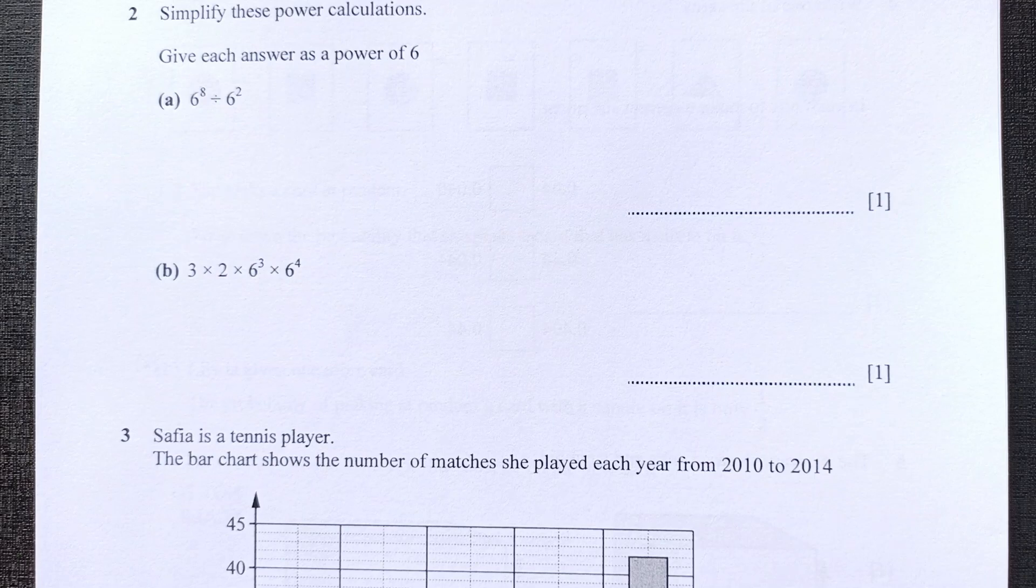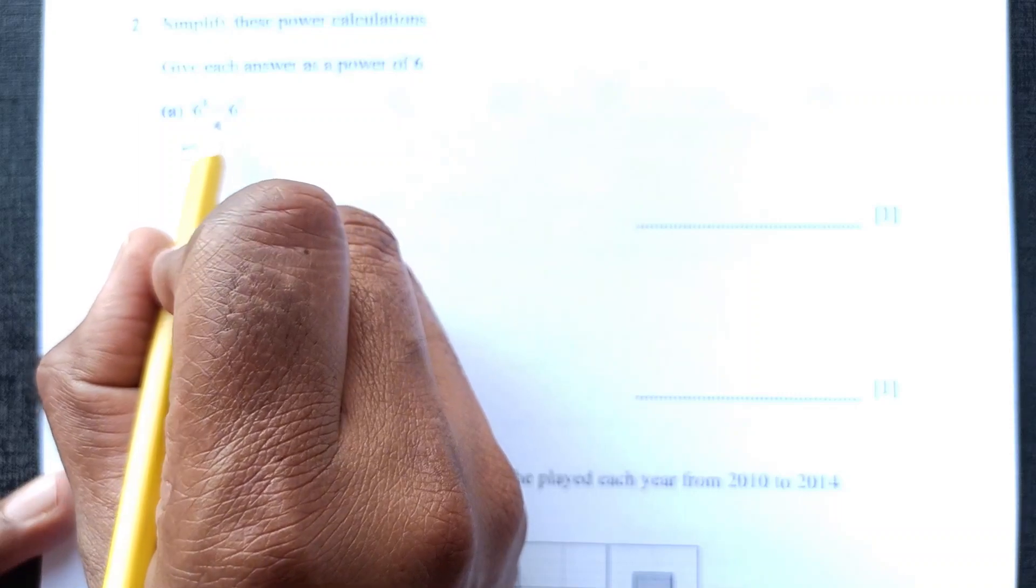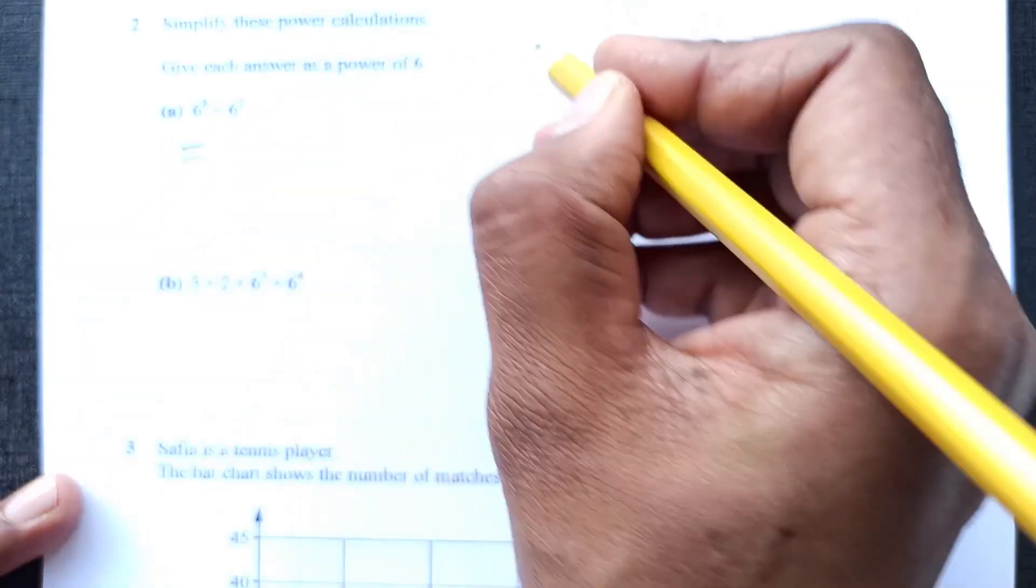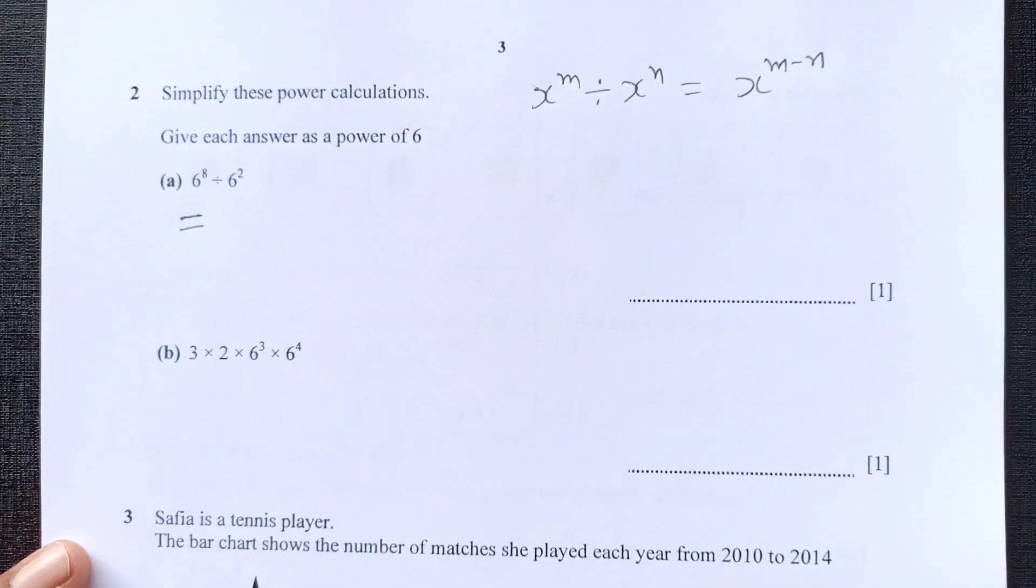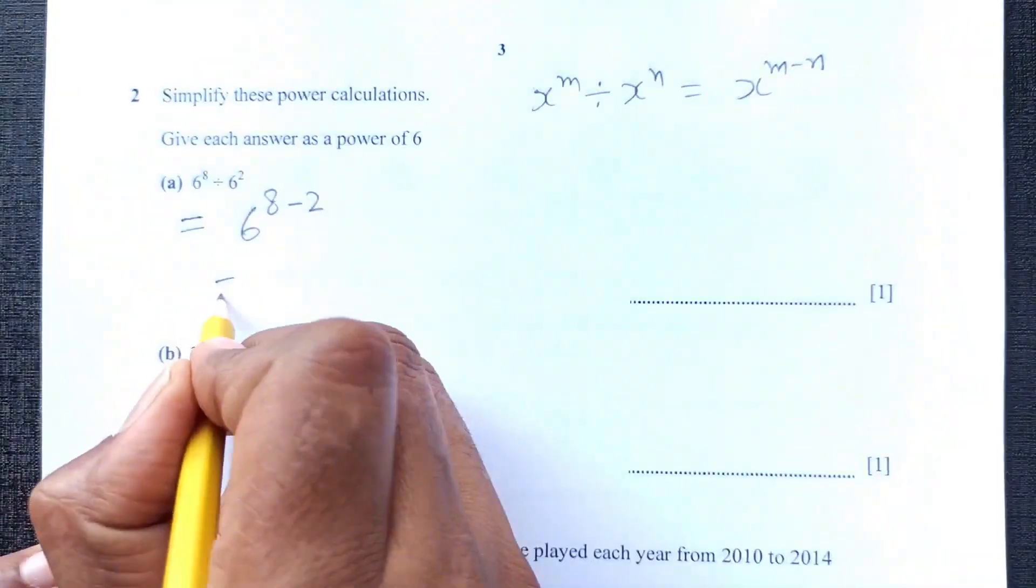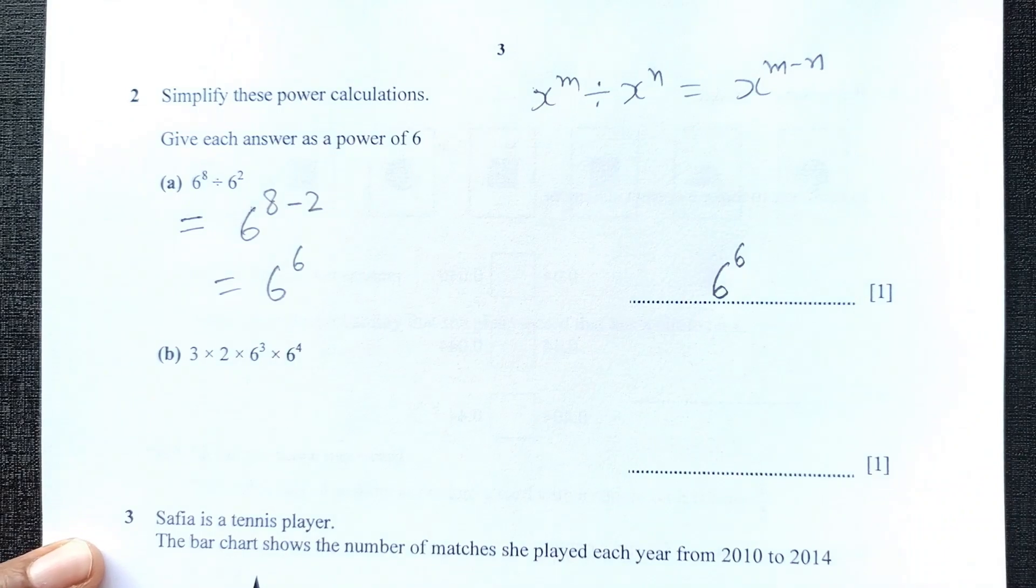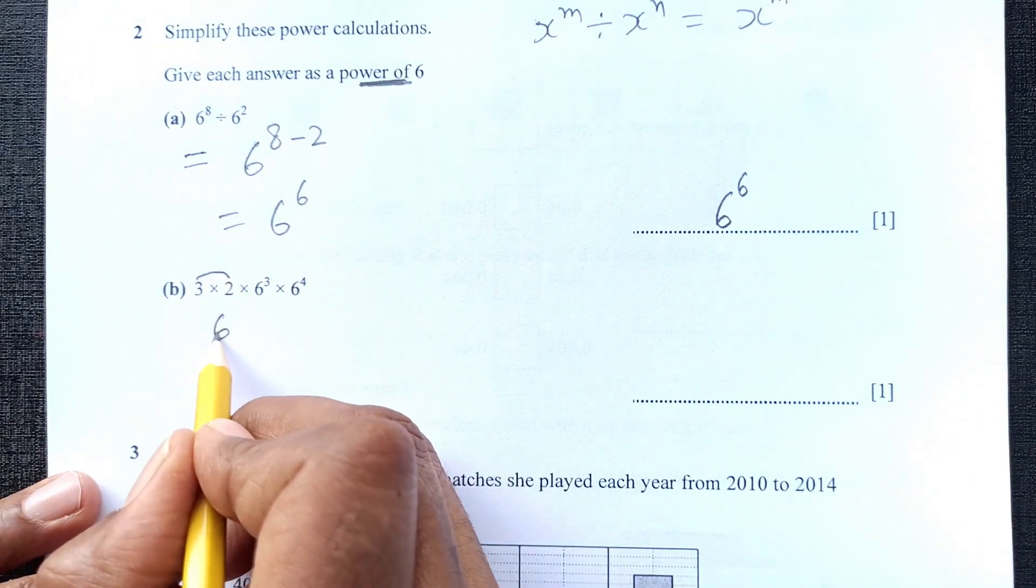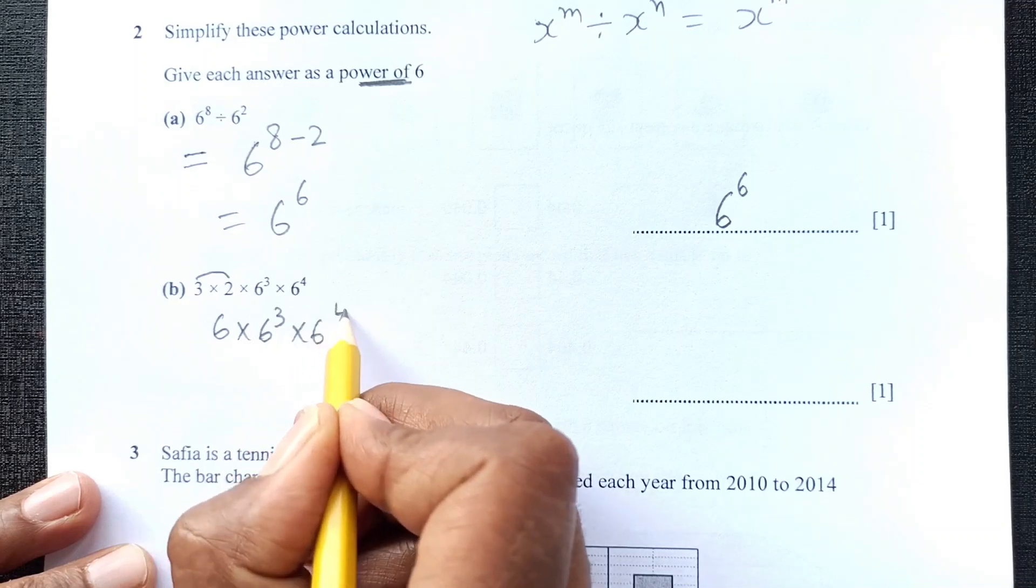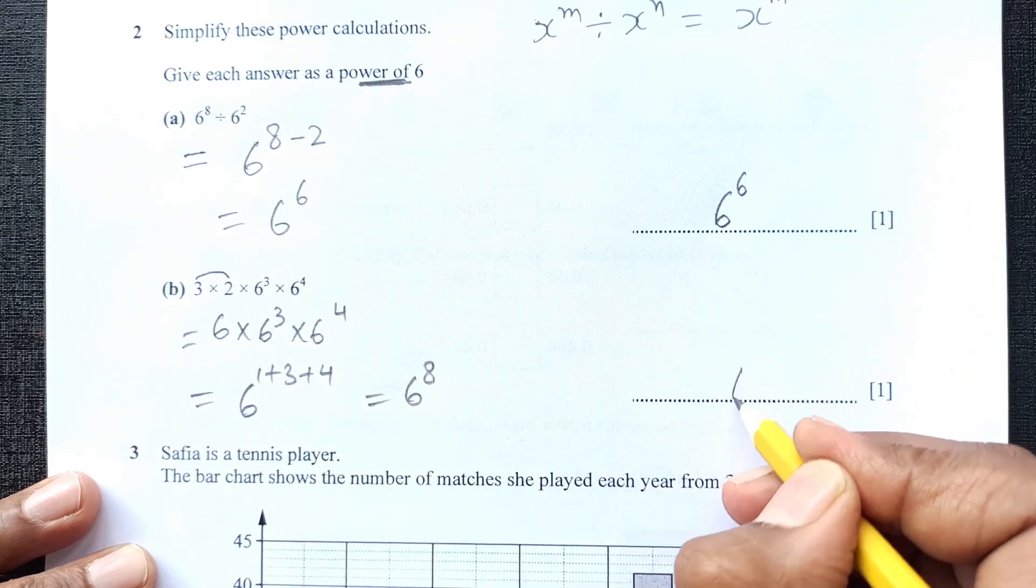Question 2. Simplify these power calculations. Give each answer as power of 6. You cannot use calculator for that. You can directly use the rules of exponents. Here we have this division sign. When we have x power m divided by x power n by exponent, we subtract the powers. Now here 6 to the 8 minus 2. 6 power 8 minus 2 is 6. So final answer is going to be 6 power 6. Don't calculate this because the instruction is give answer as power of 6. Now here also we can make it 6. 3 times 2 is 6, 6 times this one here. So it is 6 to the 1 plus 3 plus 4. So it is 6 power 8.